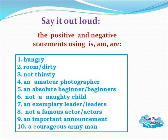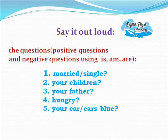Practice the positive and negative statements using is, am, are: I am hungry. The room isn't dirty. He isn't thirsty. He is an amateur photographer. I am an absolute beginner. He isn't a naughty child. He isn't an exemplary leader. They are exemplary leaders. I am not a famous actor. They are famous actors. It is an important announcement. He is a courageous army man. Now practice positive and negative questions: Is she married? Isn't she single? Are your children naughty? Is your father a teacher? Aren't they hungry? Isn't that your car? Are the cars blue?